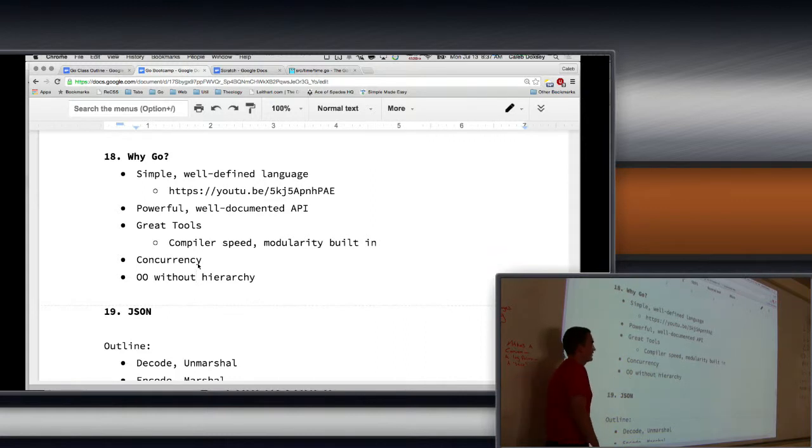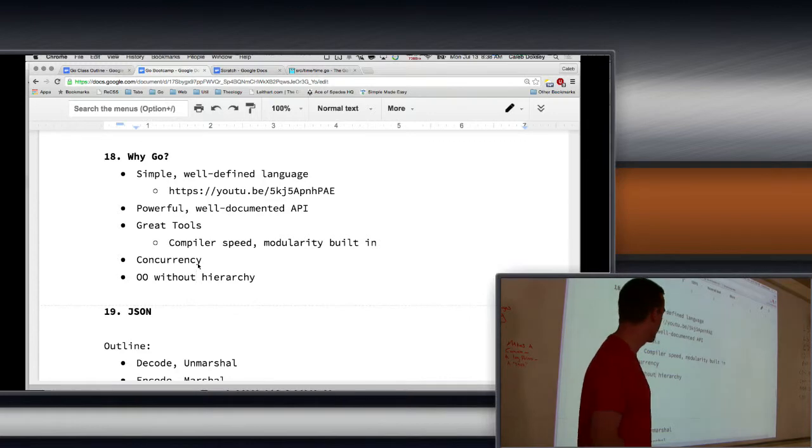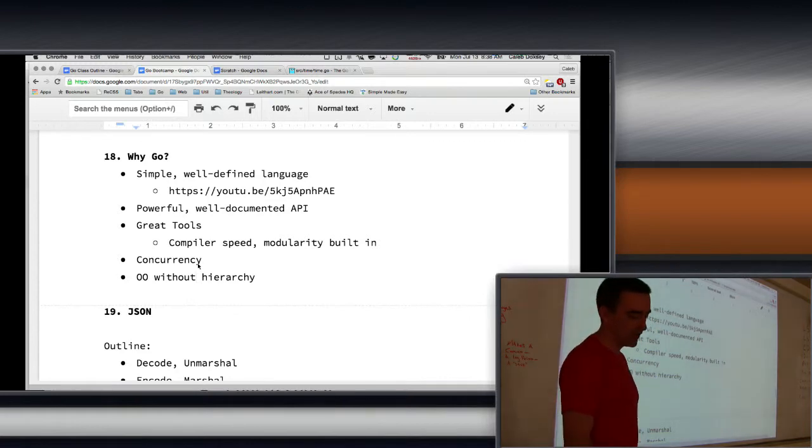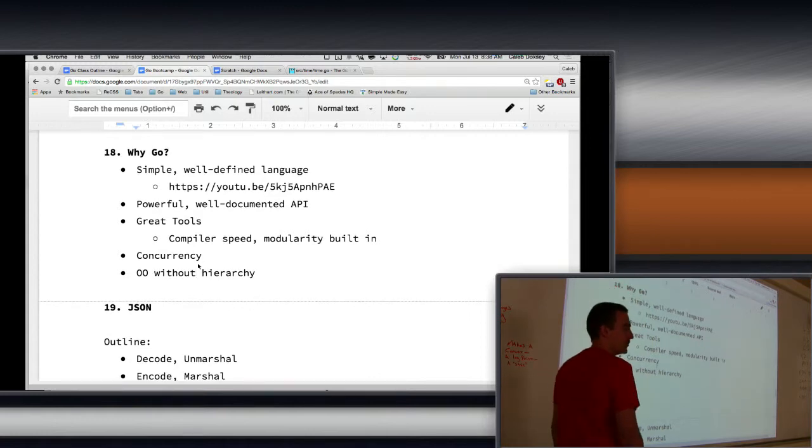And then finally you get object-oriented code without the hierarchy. People joke about the hierarchy in languages like Java, but it becomes kind of ridiculous, right? It's like the Hello World Enterprise Edition that has 13 layers of abstraction. It's a joke, but then when you look at real enterprise code, it's actually not far from the truth. That it becomes very hard to reason about those programs because there's so much abstraction. So, Go doesn't have the hierarchy. You get like the one level of abstraction and that's it.